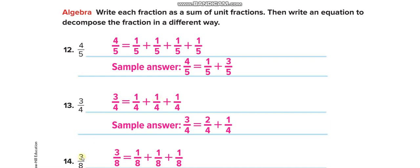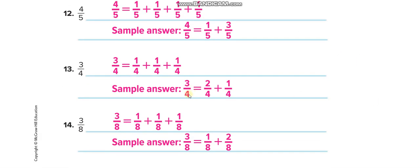Then they want you to write an equation to decompose the fraction in a different way — breaking the fraction into 2 fractions. For example, 4 over 5 can be broken into 1 over 5 plus 2 over 5. Here, 3 over 4 can be broken into 2 over 4 plus 1 over 4. Similarly, 3 over 8 can be broken as 1 over 8 plus 2 over 8, and when you add it back you get 3 over 8.